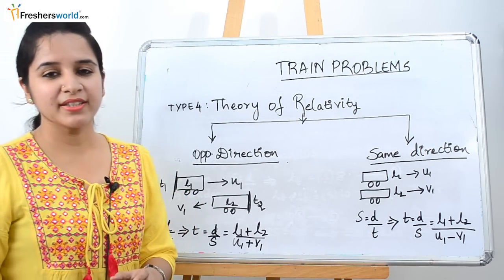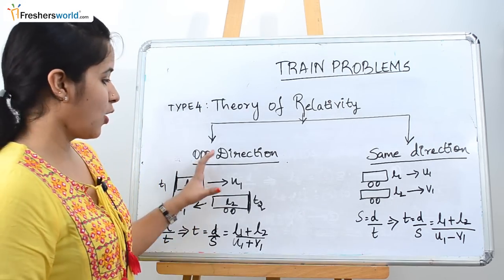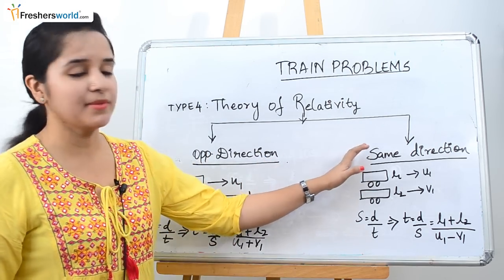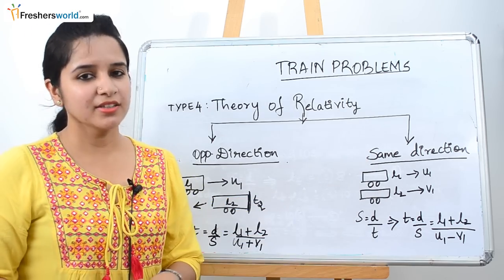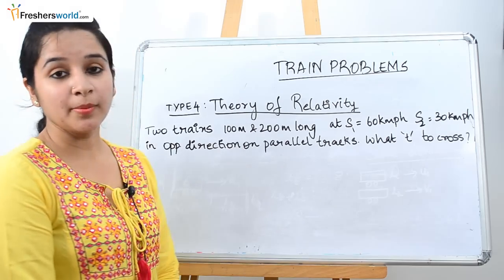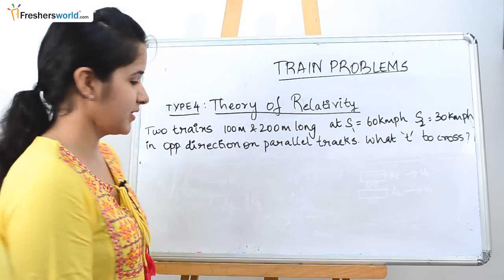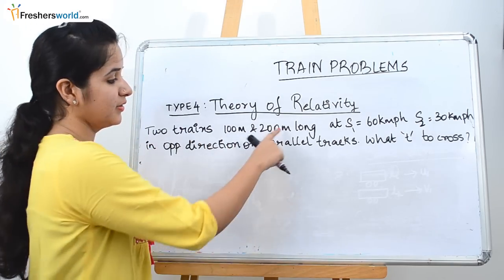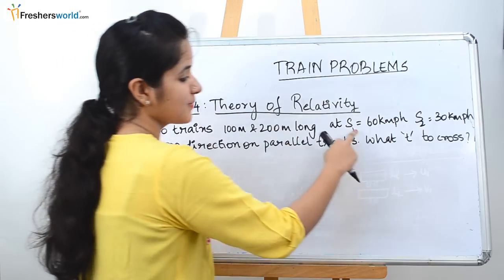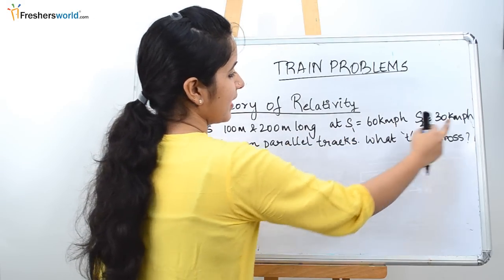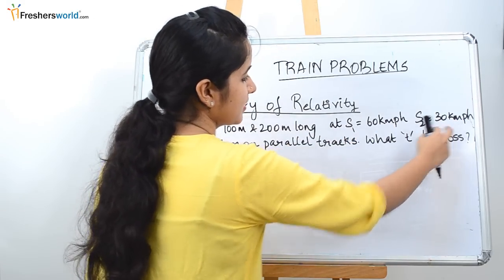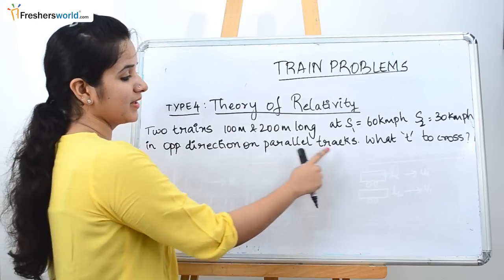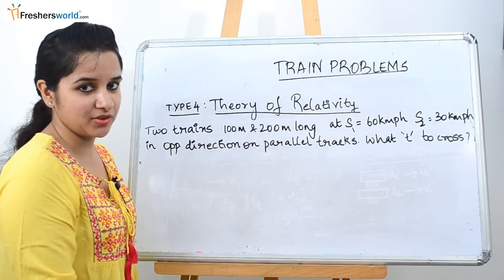Now you should understand the formula behind trains crossing each other in opposite direction and in the same direction. Let's solve some problems. Problem 1: two trains, 100 meters long and 200 meters long, travel at speeds of 60 km/h and 30 km/h respectively in the opposite direction on a parallel track. What is the time taken to cross each other?